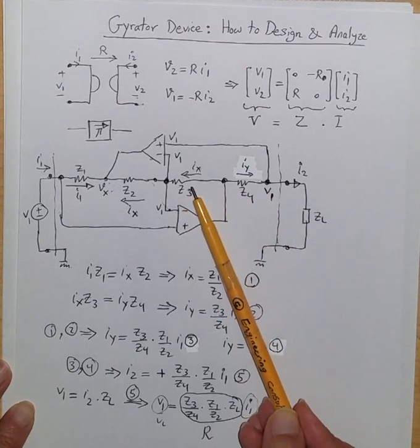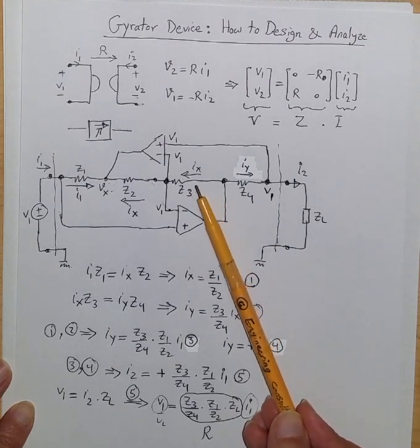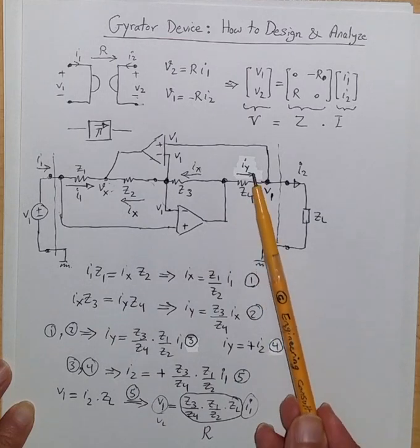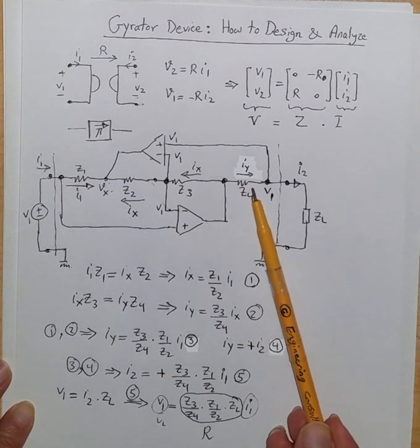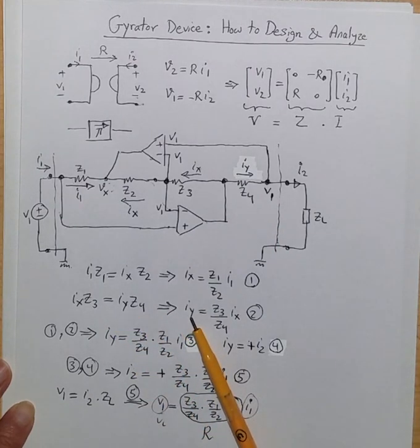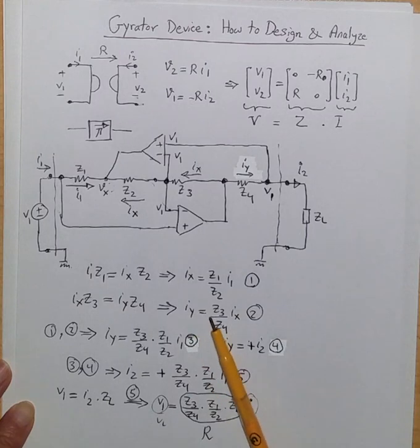So it means the voltage drop across Z4 should be equal to voltage drop across Z3. Because of that Z3 times Ix is equal to Z4 times Iy, that is the current going this way through Z4. So from here we can say Iy is equal to Z3 divided by Z4 times Ix.